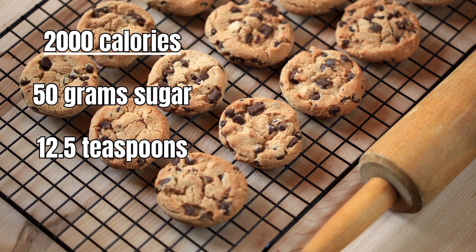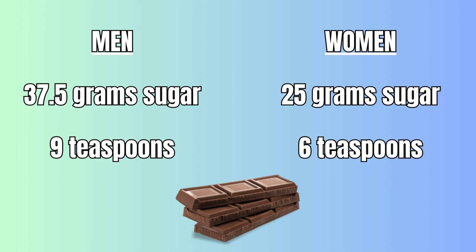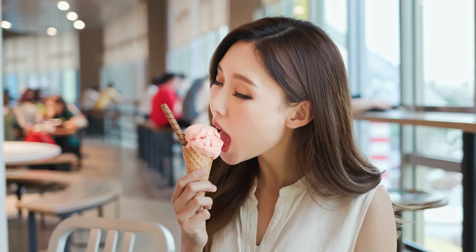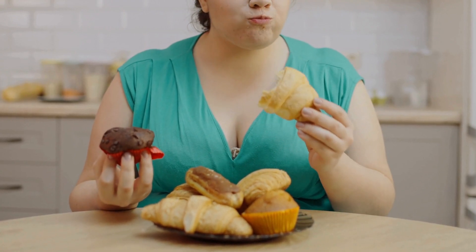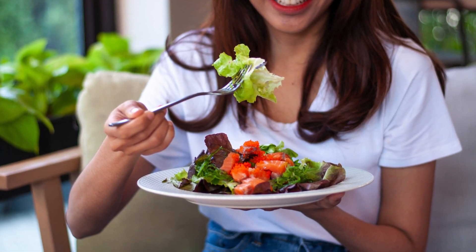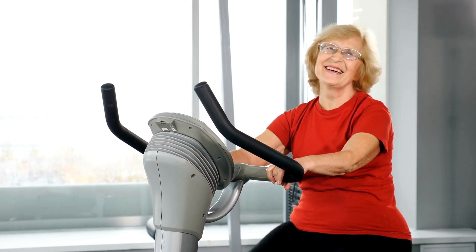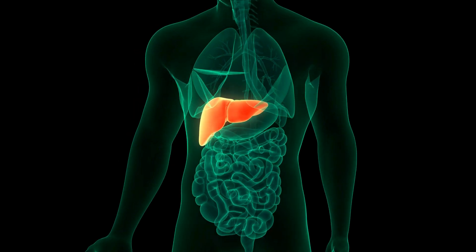According to the American Heart Association, the maximum amount of added sugars you should eat in a day are 37.5 grams, or 9 teaspoons for men, and 25 grams, or 6 teaspoons for women. It's important to note that moderation is key. Enjoying sugary treats occasionally is part of a balanced diet, but habitual consumption of high-sugar foods can lead to harmful health effects beyond just weight gain — it can seriously affect your liver's health. Being mindful of the amount of sugar in your diet is a proactive step towards maintaining liver health and overall well-being, preventing the onset of fatty liver disease and ensuring your liver functions optimally.